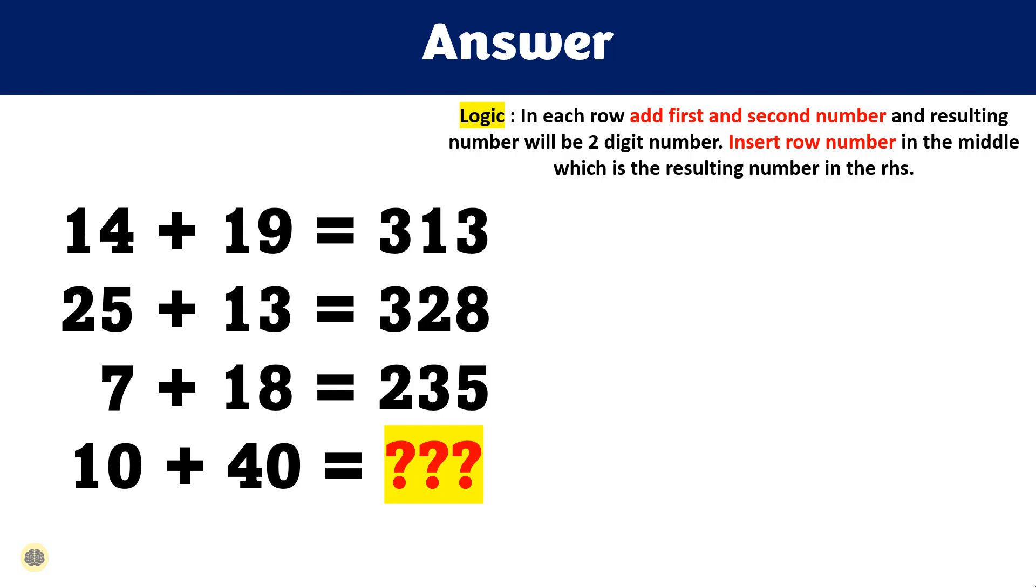It appears that there is a certain mathematical transformation occurring in each equation. Let's break it down step by step. In each row, add first and second number and resulting number will be two digit number. Insert row number in the middle which is the resulting number in the RHS.